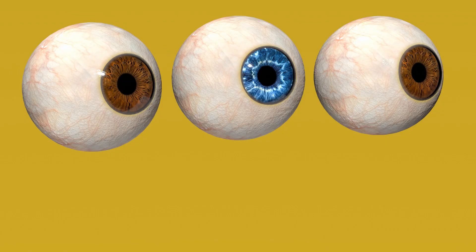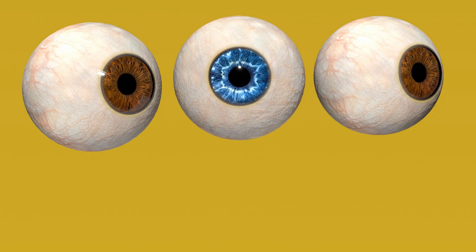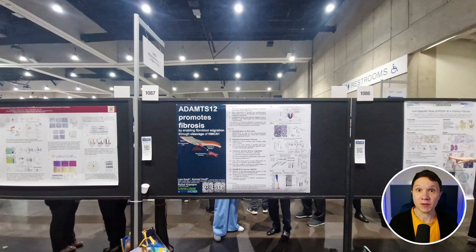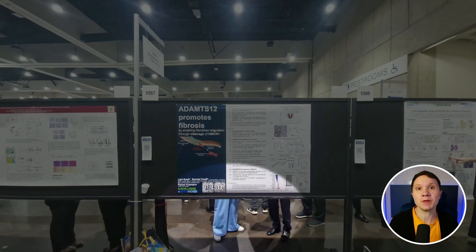You can make people look at something just by making it look different than everything around it, because your eye goes to where the most contrast is first. So in this photo of a row of scientific posters, whose legs do you see first? The blue pants, right?